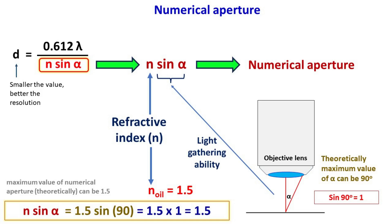However, practically, since there is always some distance between the objective and the sample, the value of alpha will be less than 90 degrees. Hence, practically, the value of numerical aperture is always less than 1.5.